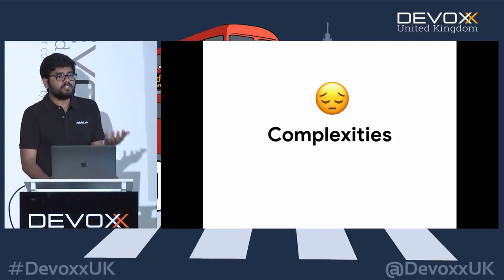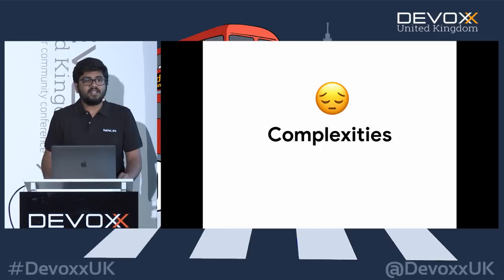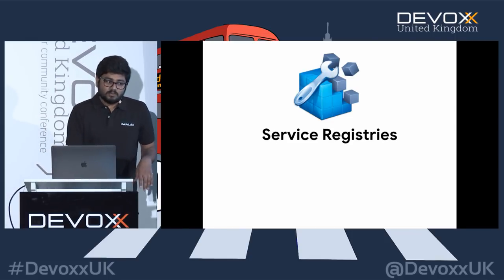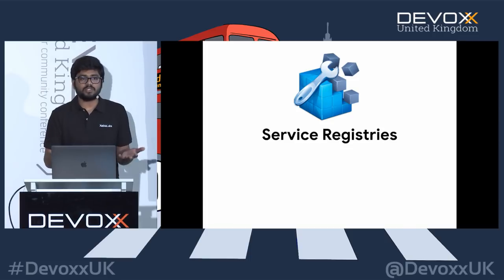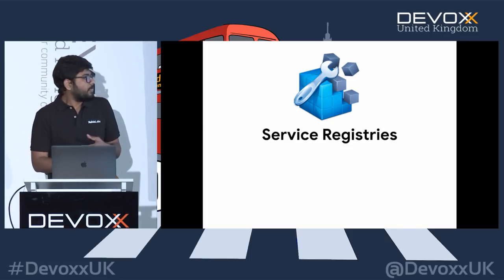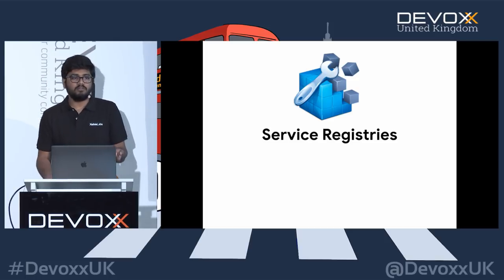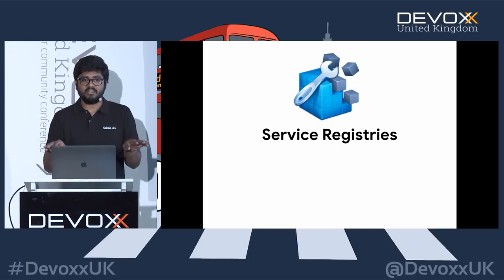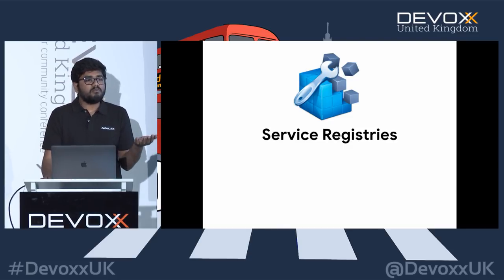What are the biggest complexities in microservices? Deployments. Configuration. And starting new microservices. You need extra components like service registries — which register and deregister your services as they come up and go down, because in the microservices world, everything is dynamic and flaky. You also need health checkers that tell you whether a given service is working correctly. These are highly available components you need to add to your application.